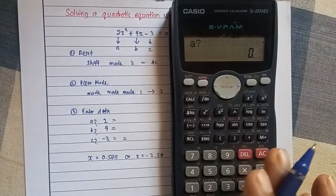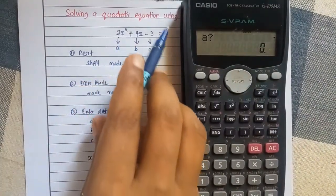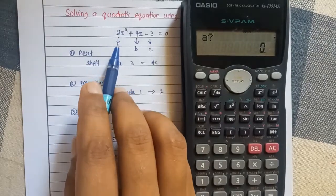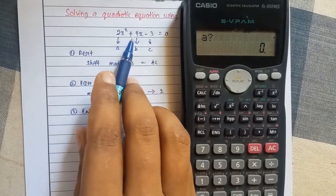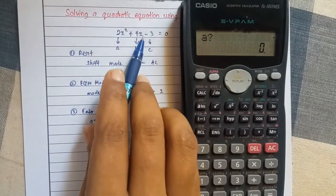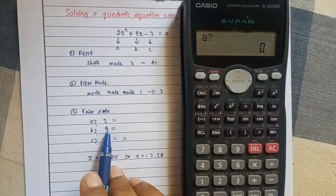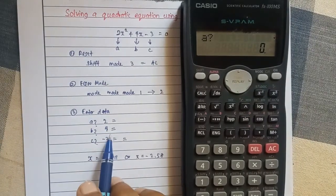Then, as the next step or the third step, you need to enter this data. So here in this quadratic equation, the value of A is 2, the value of B is 4, the value of C is minus 3. So this is how you can feed this data to the calculator memory.